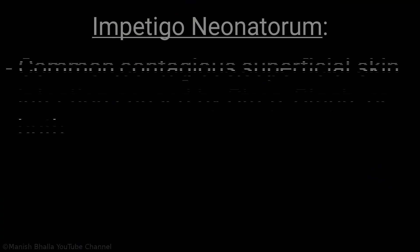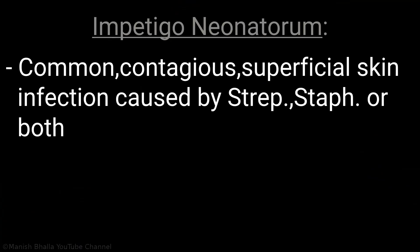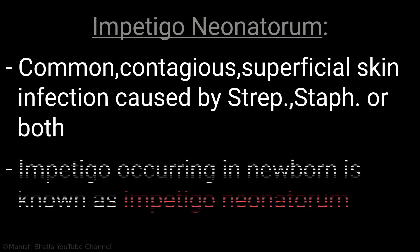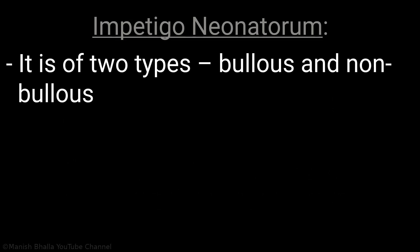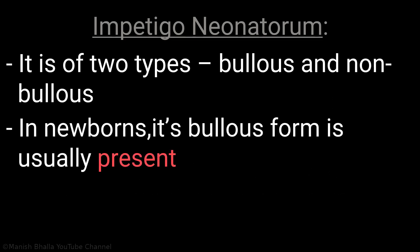Impetigo is a common contagious superficial skin infection caused by streptococci, staphylococci, or both. When it occurs in a newborn, it is known as impetigo neonatorum. It is of two types: bullous and non-bullous. In newborns, the bullous form is usually present.